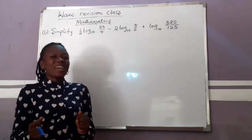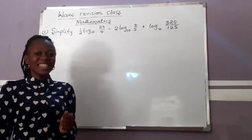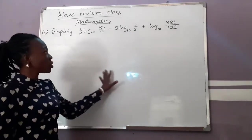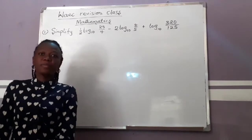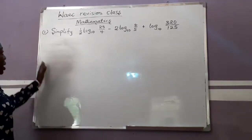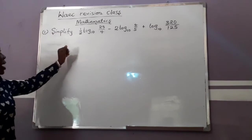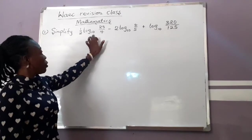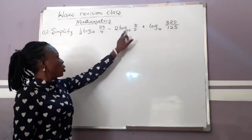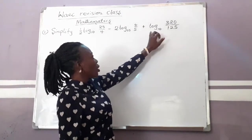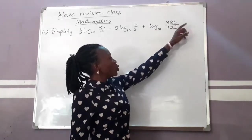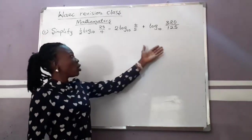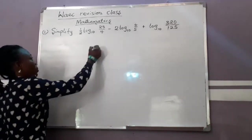Hi guys, I'm Miss Happiness Life at IDC Center. Today we'll be looking at questions and solving some problems. Simplify: 1 over 2 log 25 over 4 base 10, minus 2 log 4 over 5 base 10, plus log 320 over 125 base 10. All these questions are in base 10. Now let's simplify.